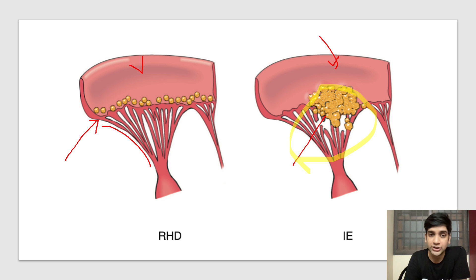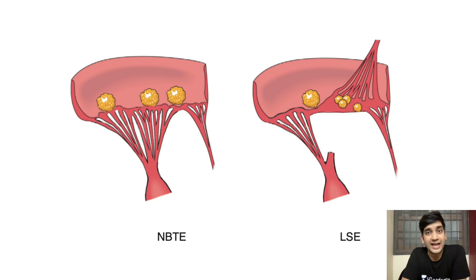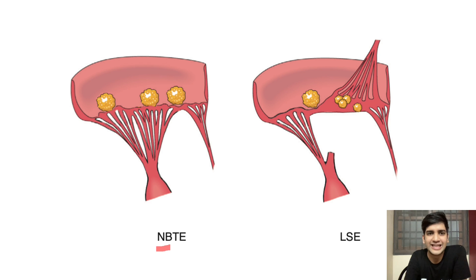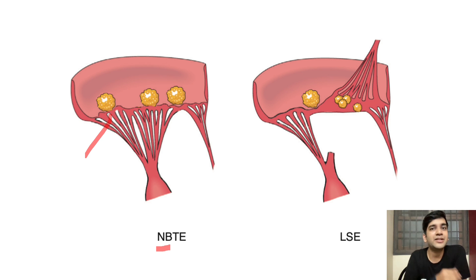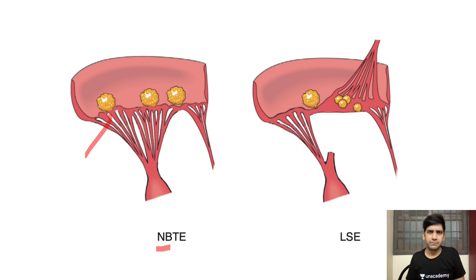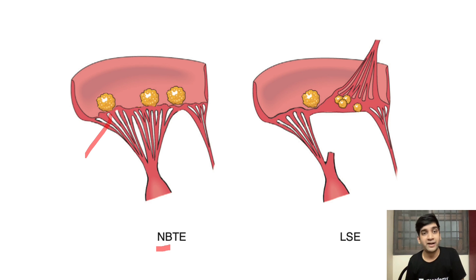The other two types are also quite common. NBTE stands for non-bacterial thrombotic endocarditis. Non-bacterial means it is sterile. Thrombotic means what is on the surface of the valve is nothing but a thrombus. So any prothrombotic disease can have this — antiphospholipid antibody syndrome (APLA), DIC, leukemias like AML M3 which causes DIC, Trousseau syndrome, pancreatic cancer. Any prothrombotic state can have NBTE. It is only thrombus on the endocardium.